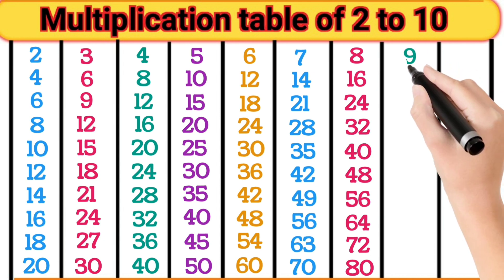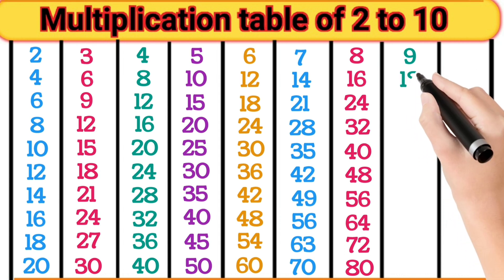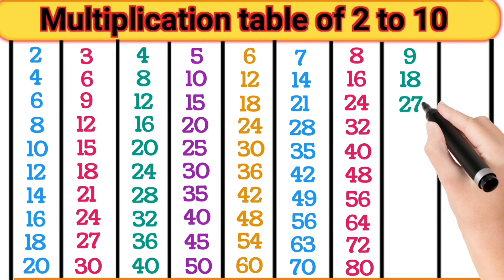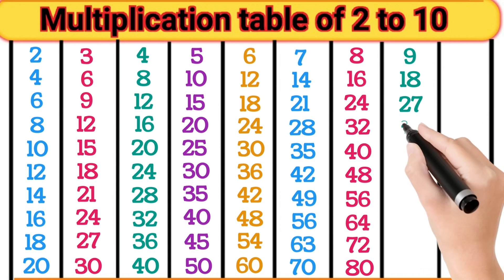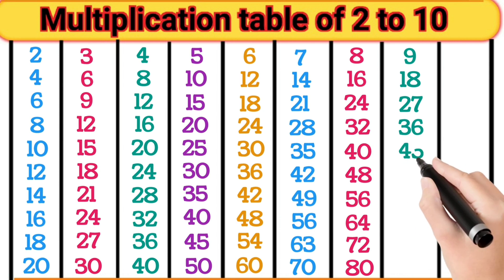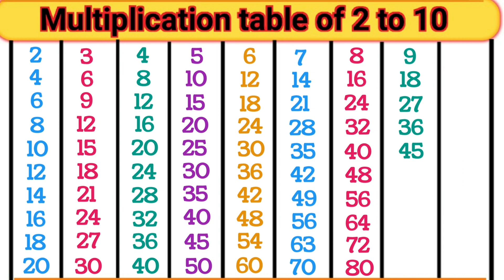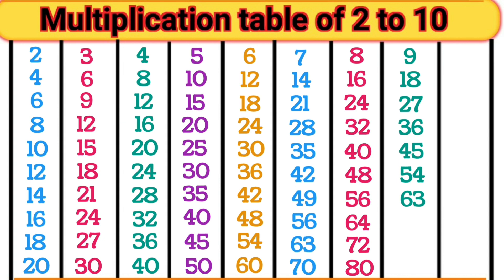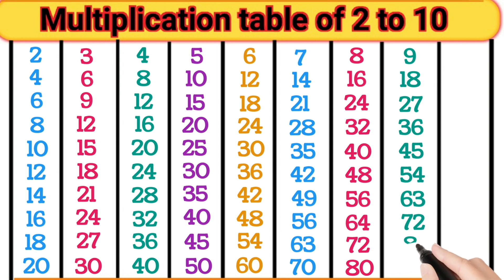9 1s are 9. 9 2s are 18. 9 3s are 27. 9 4s are 36. 9 5s are 45. 9 6s are 54. 9 7s are 63. 9 8s are 72. 9 9s are 81. 9 10s are 90.